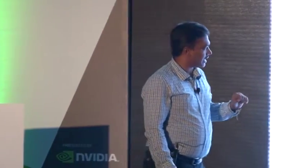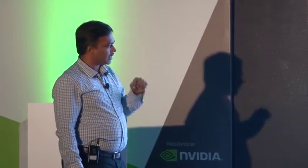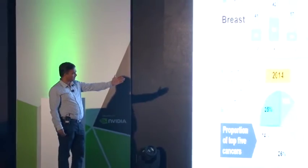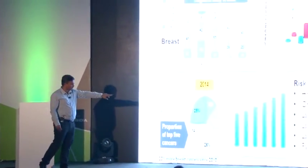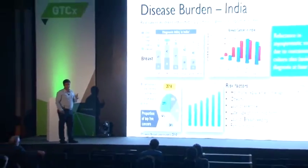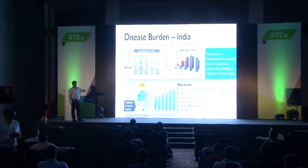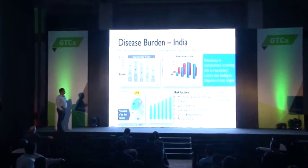At least two key risk factors can be controlled: giving birth at a later age, such as after 30, is one risk factor; and breastfeeding is another common issue. These two factors can actually be managed, unlike family history, which cannot be changed.